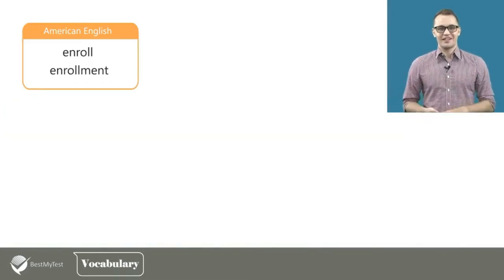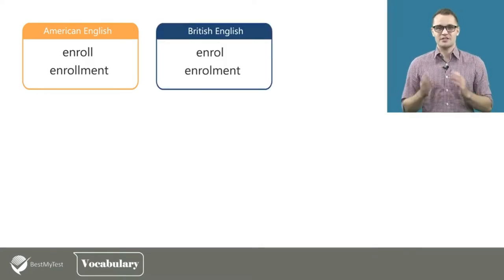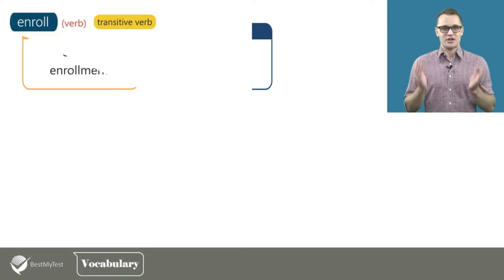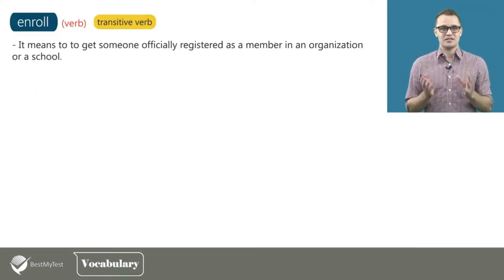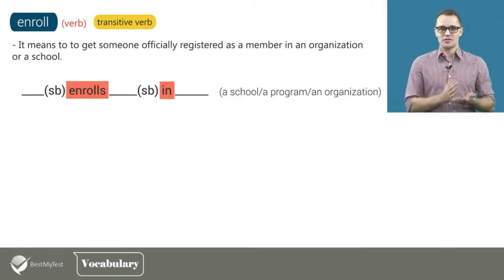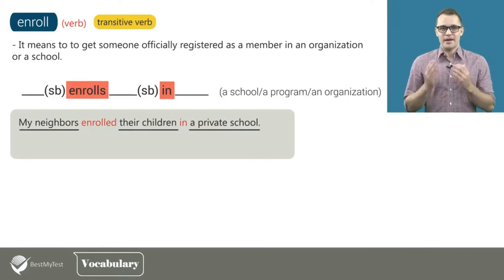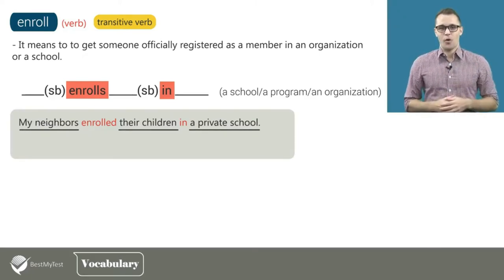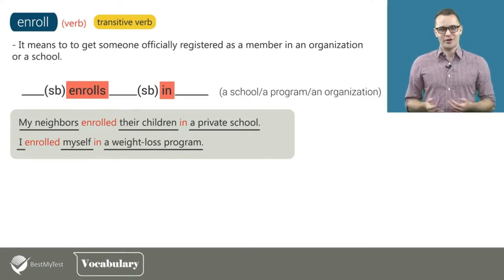Let's look at another two words: enroll and enrollment. In British English, the spellings are enrol and enrolment with one L only. As a transitive verb, enroll means to get someone officially registered as a member in an organization or a school. In this case, the pattern is 'somebody enrolls somebody else in something.' For example: my neighbors enrolled their children in a private school, or I enrolled myself in a weight loss program.